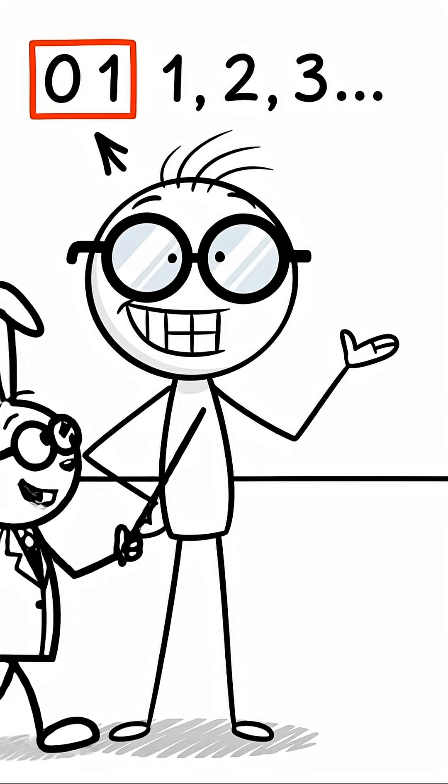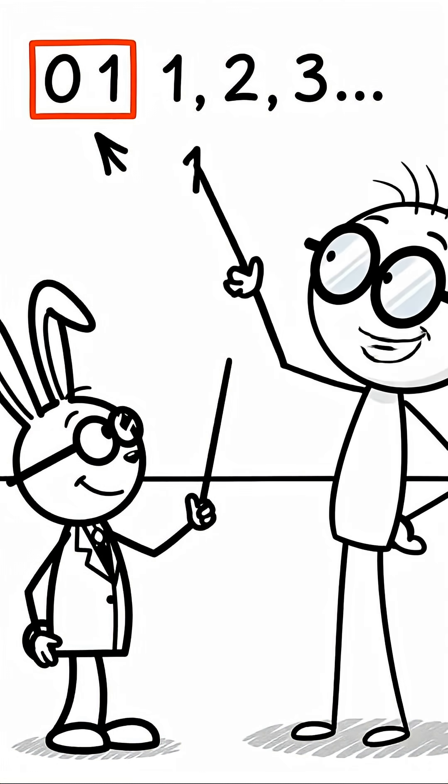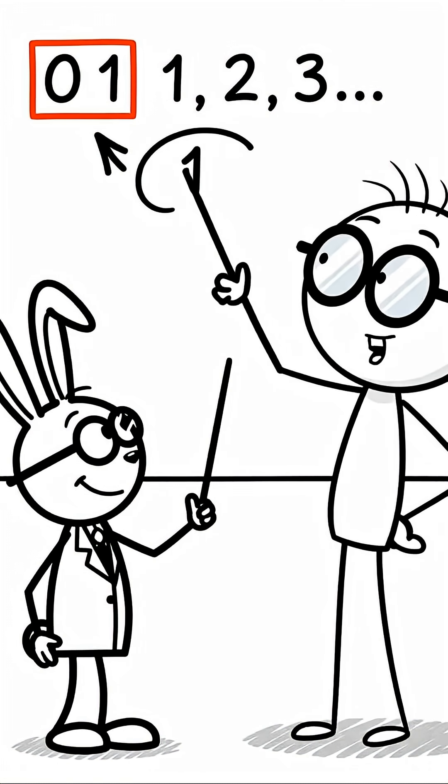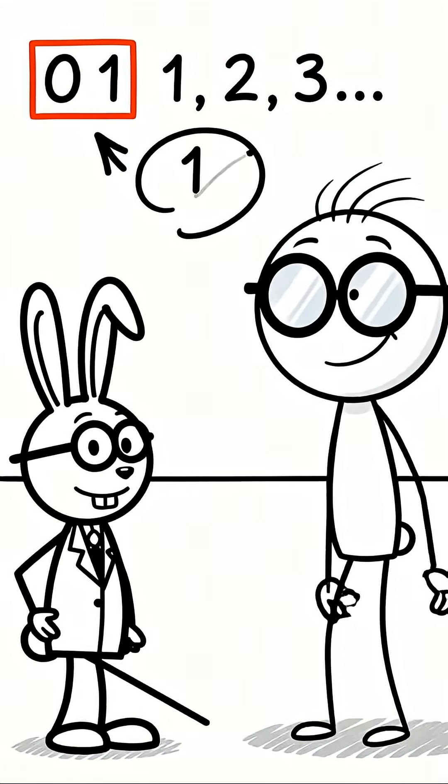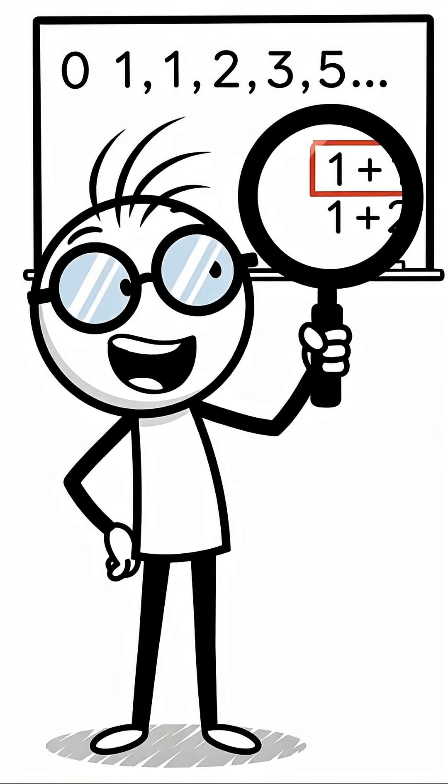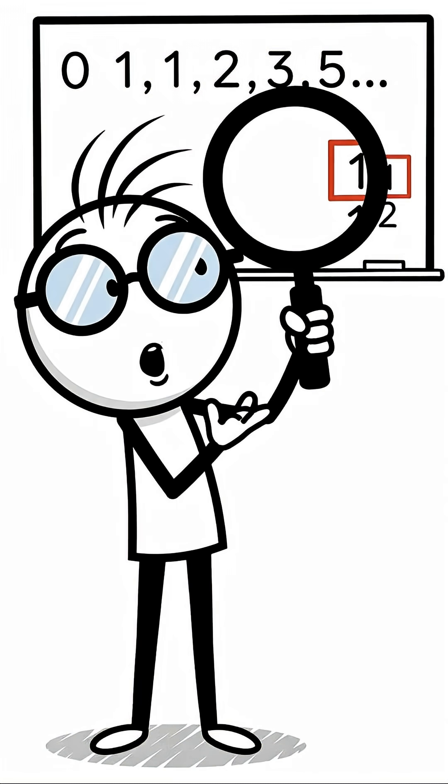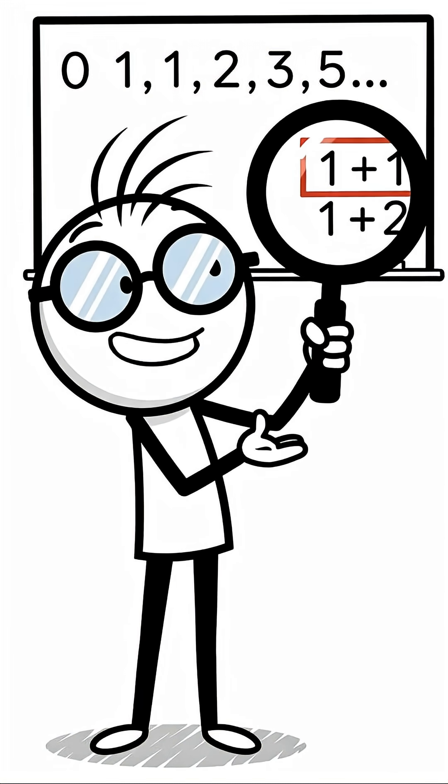The secret is adding neighbors. Look at the start. Zero plus one equals one. Move over. One plus one is two. One plus two is three. You just add the last two numbers.